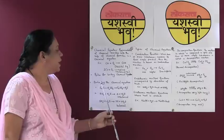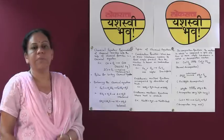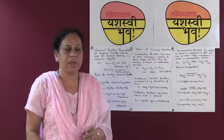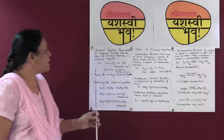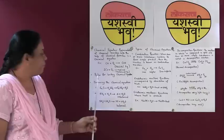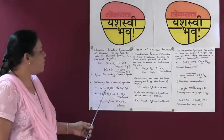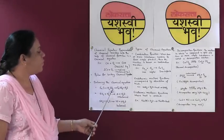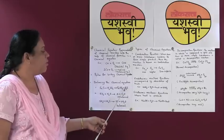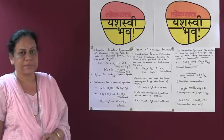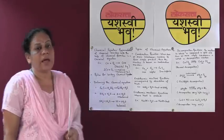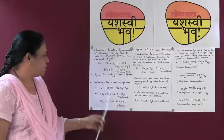Now let us see how we balance chemical equations and what are the rules for balancing them. Let us start with a simple example: iron sulphide reacts with sulphuric acid to give ferrous sulphate and hydrogen sulphide gas. Let us see which atoms are involved in the chemical reaction.